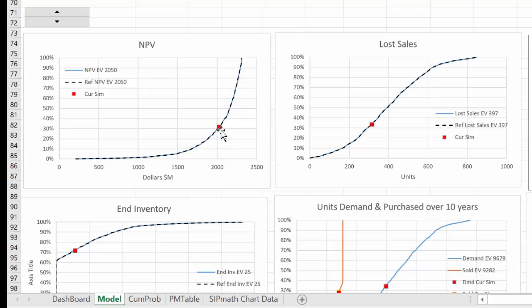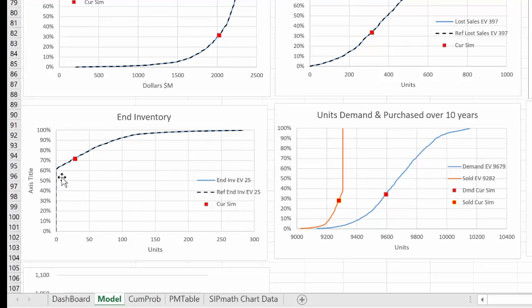And we end up with a curve that looks like this for NPV. This red bar represents the current simulation. Here is the lost sales. Down here is the inventory. So you can see that about 60% of the time, we do not end up with any inventory. And the other 40%, there are a few cases where I end up with a lot of inventory left over, even ordering 931. And here are the units demanded and purchased over the 10 years. So the total demand is given by this blue curve. And the orange line is what we actually ordered and sold.